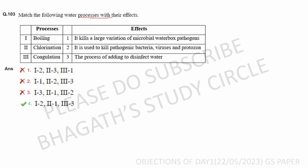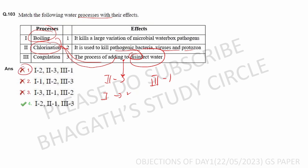Next: match the following water treatment processes. Boiling — kills pathogenic bacteria and viruses. Chlorination — disinfection; it is the process of adding chlorine. Flocculation — formation of flocs. So the correct matching is one and three. Chlorination is a disinfectant — option one and three is correct.